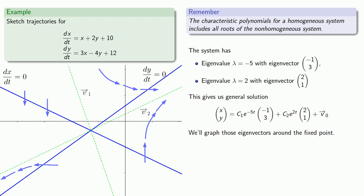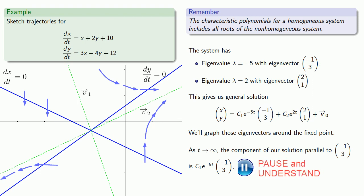As t goes to infinity, the component of our solution parallel to (-1, 3) is going to be some constant e to the power minus 5t times the vector (-1, 3), which will tend to the zero vector. It's as if this component fades away.